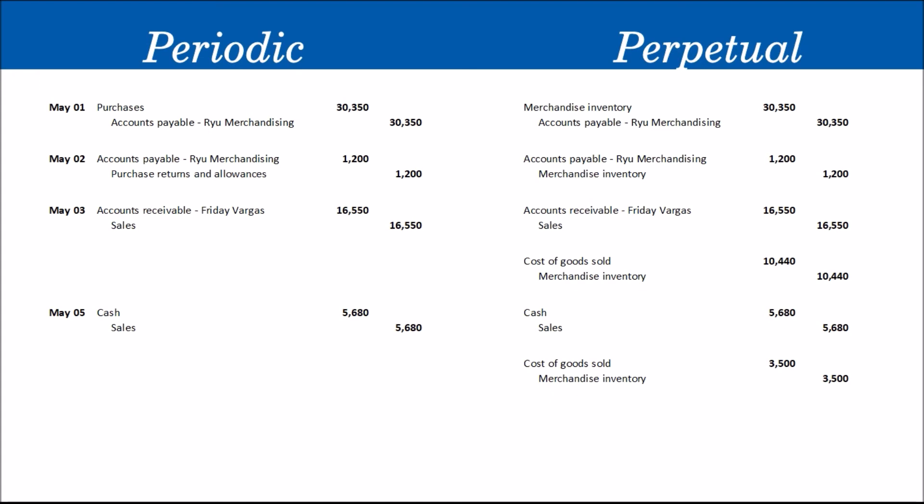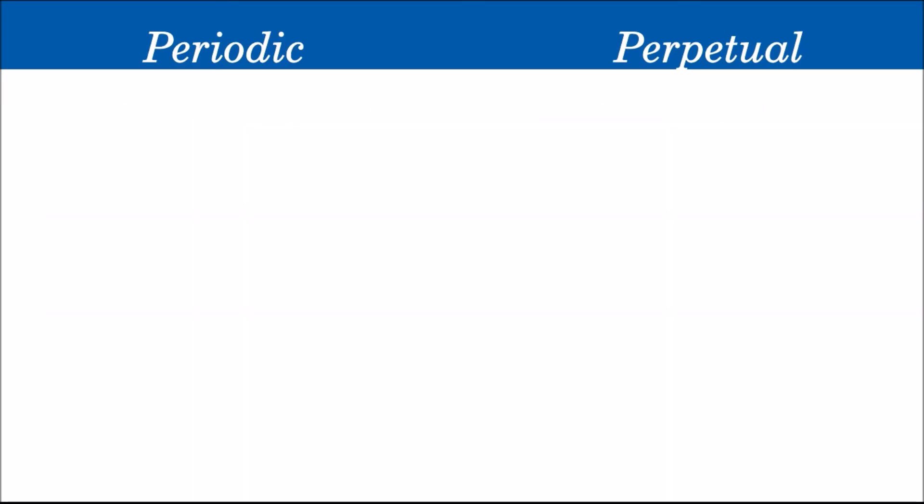For May 8, there was a purchase of a computer set from Unzu Sales amounting to 57,880. Do not be confused — a computer set is part of the company's equipment, not inventory. So the entry is simply debit Equipment and credit Cash for 57,880. This entry is the same under both the periodic and perpetual inventory methods.